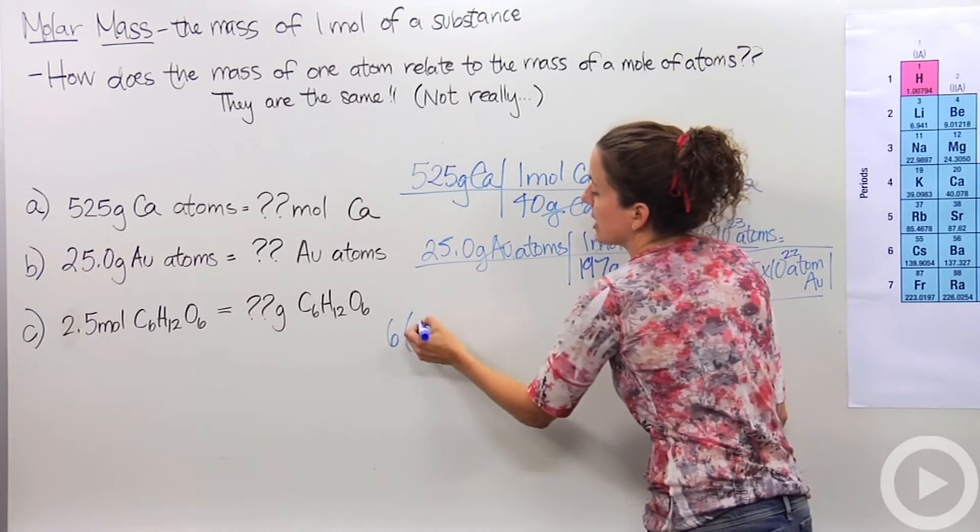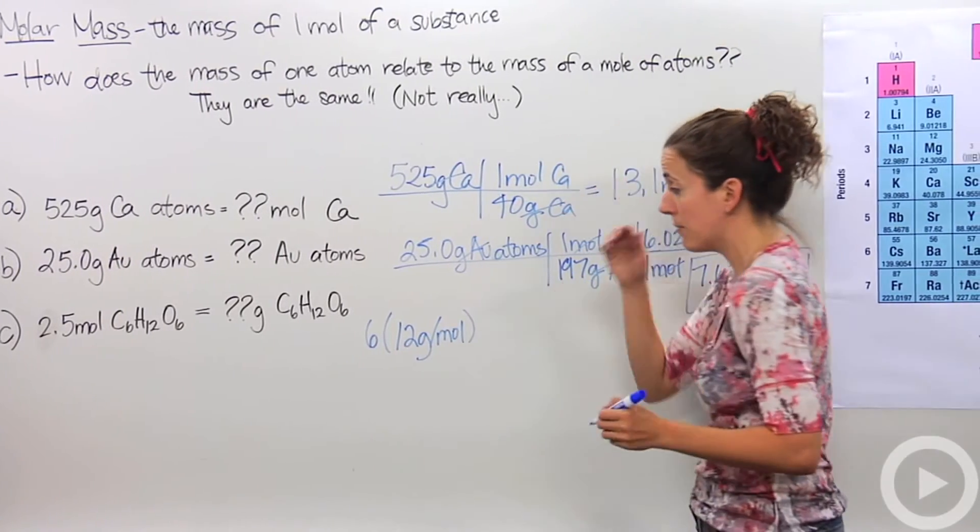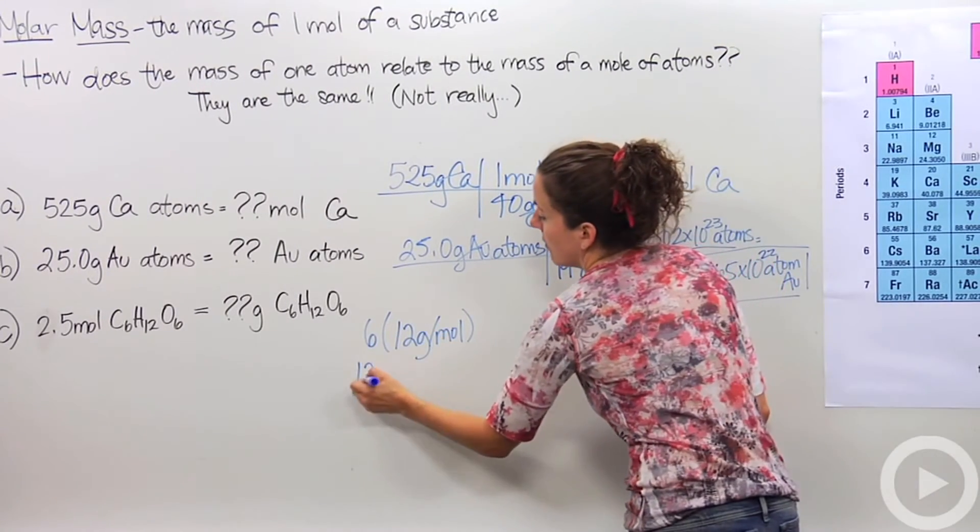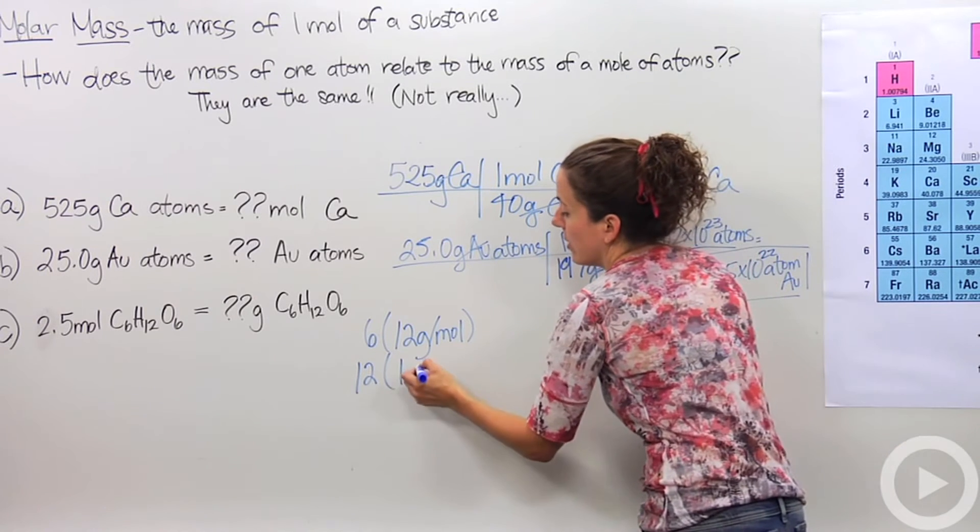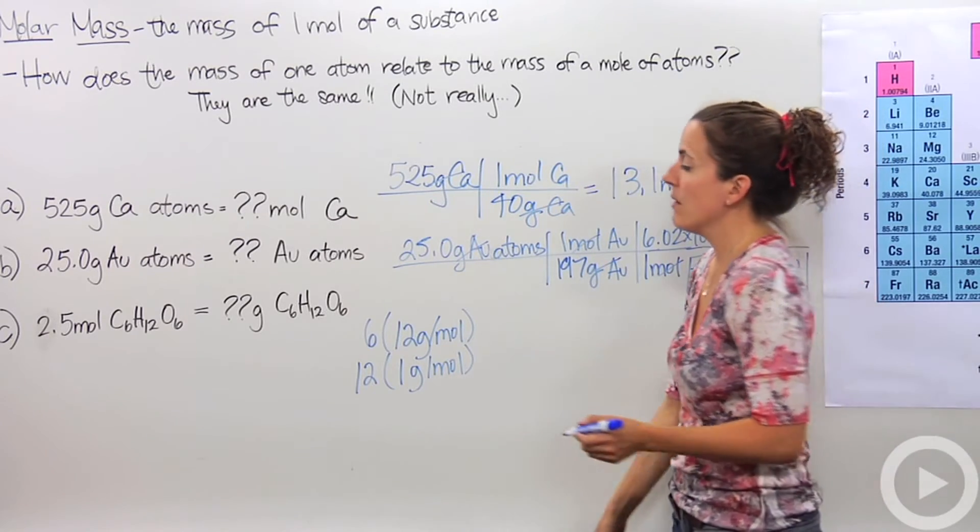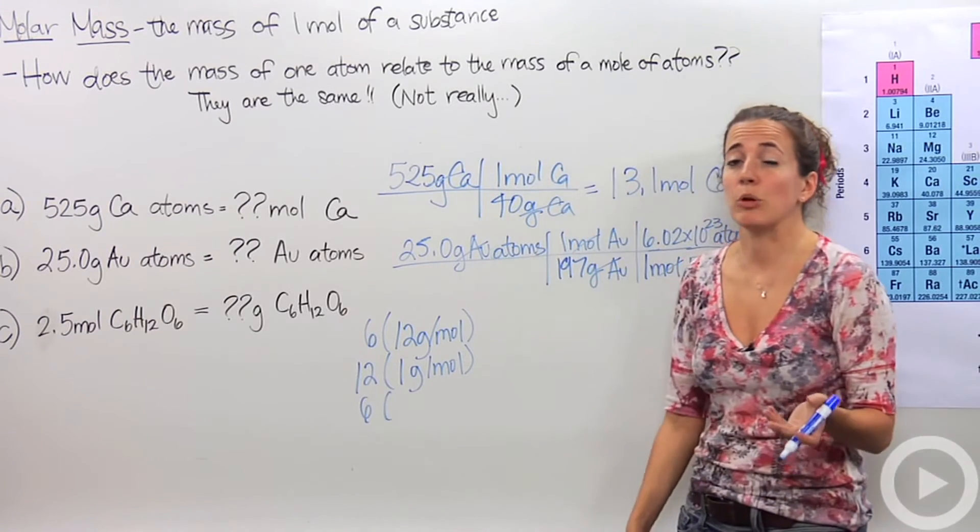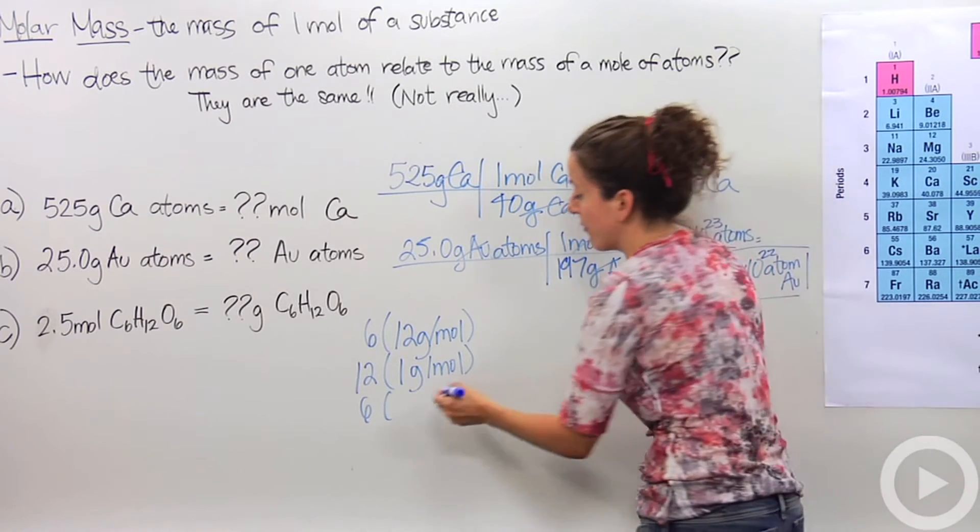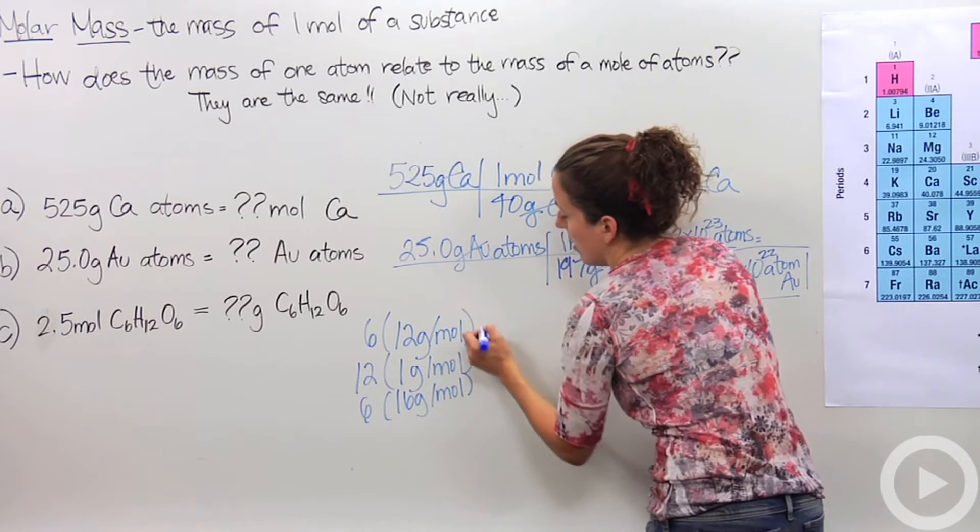We have 6 carbon atoms. Carbon has a mass of approximately 12 grams per mole. From our periodic table, we can note that. We have 12 hydrogen atoms. Hydrogen has approximately the mass of 1 gram for every mole of hydrogen. I'm rounding a lot here. Just bear with me. And then I have 6 oxygen atoms. Oxygen has a molar mass of approximately 16 grams per mole.